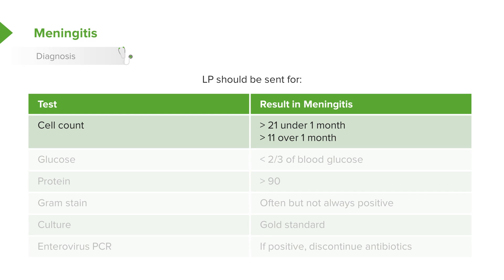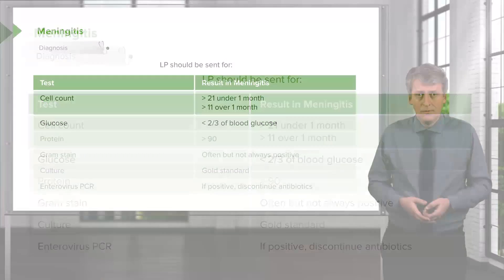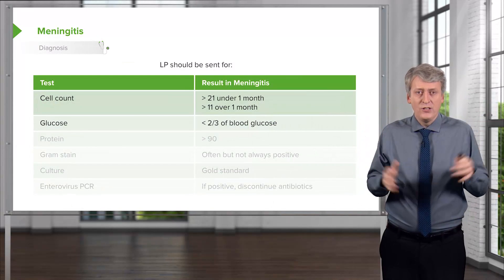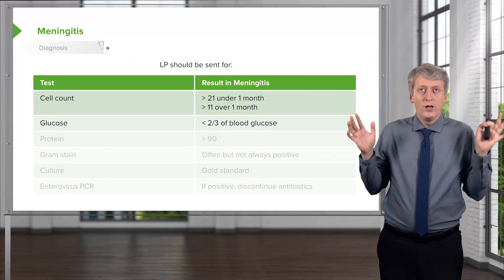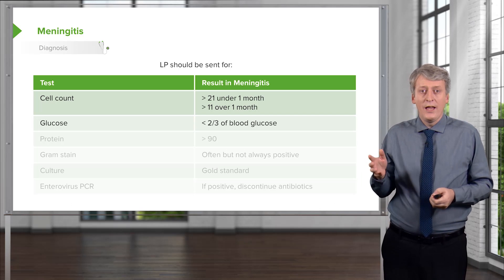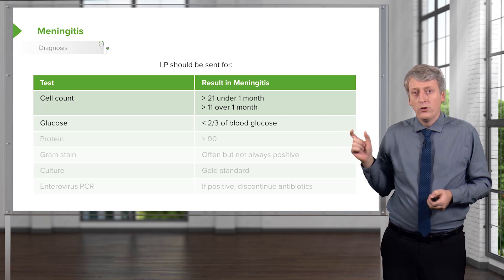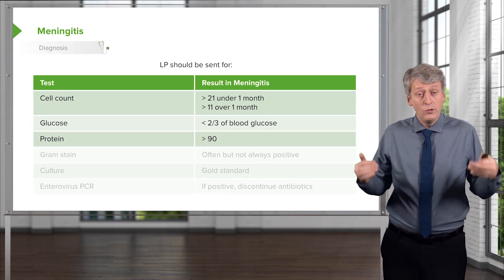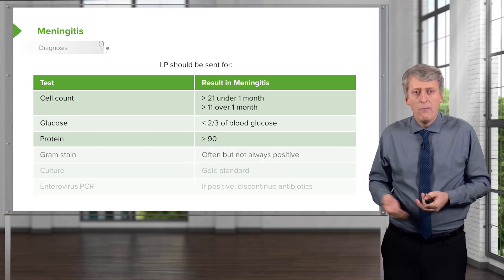The first is a cell count. In a patient with meningitis under a month of age, that cell count will be over twenty-one. In a patient with meningitis who's between one and two months, it'll be over eleven. We should send that CSF for glucose, and generally the glucose is about two-thirds of the blood glucose. So if it's less than that, it's more likely to be meningitis. If you want to think about it, you can think about it as if the bacteria are eating glucose and making protein. So if there's bacterial meningitis, these patients will have less than two-thirds of their serum glucose in their spinal fluid. Likewise, the protein will be high. So if they have meningitis, they should have a high protein above about ninety.